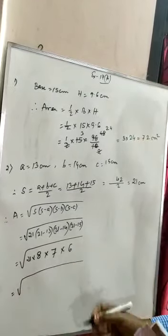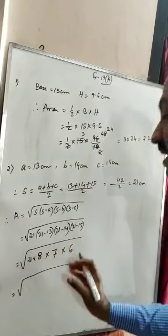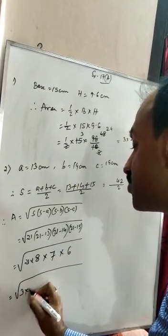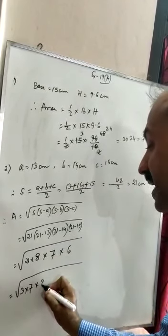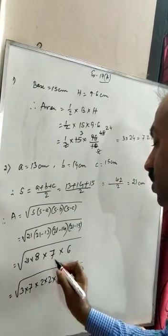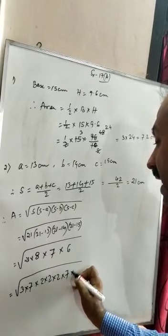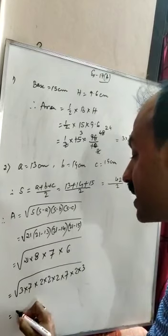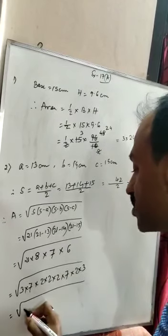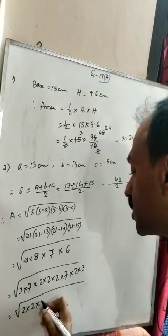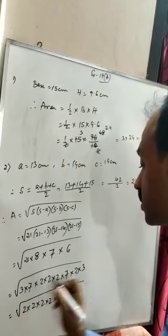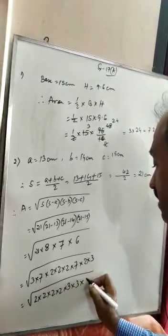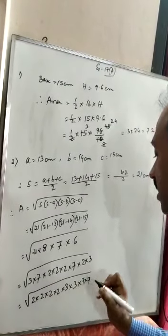So now let us break the numbers to simplify. 21 we can break as 3 into 7. 8 we can break as 2 into 2 into 2. 7 stays as 7. And 6 we can break as 2 into 3. Now we will pair the numbers. We have 2 appearing four times, 3 appearing twice, and 7 appearing twice.